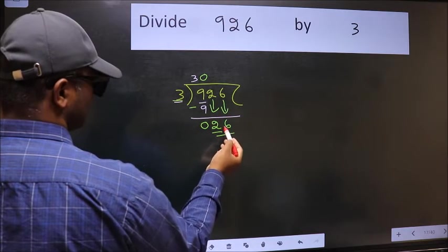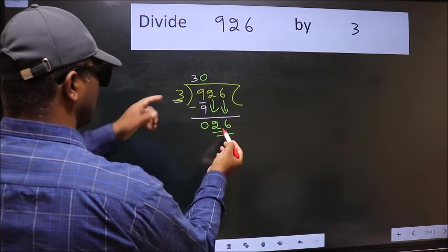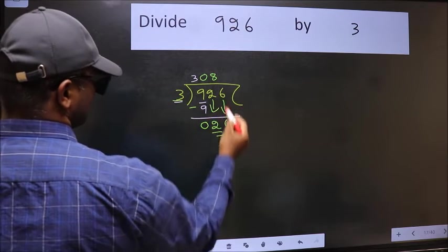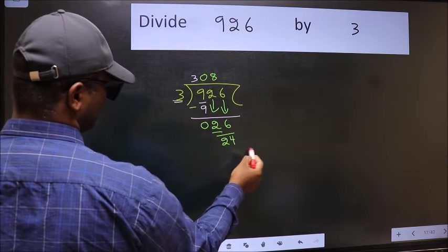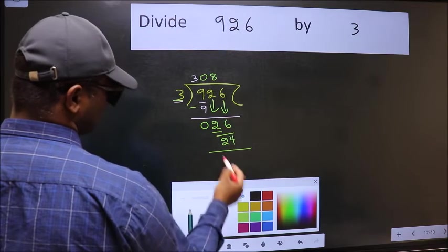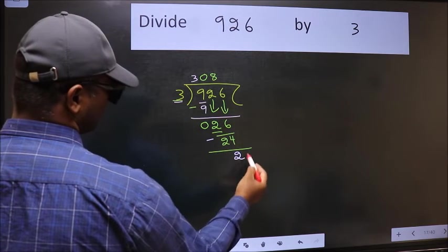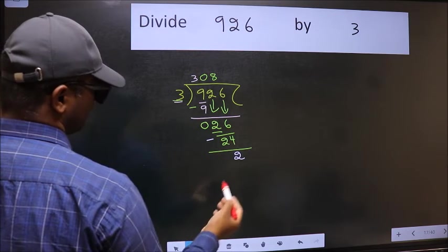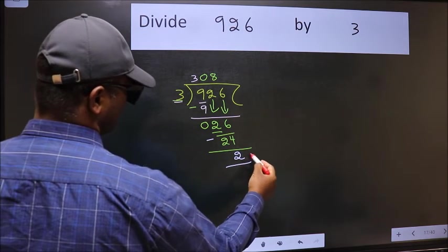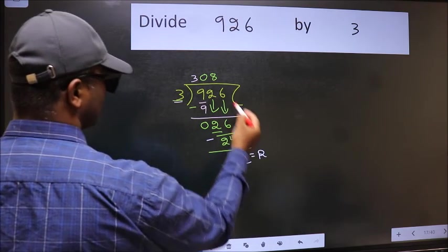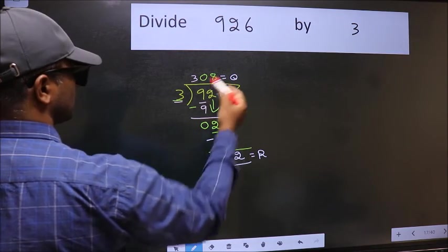Now 26. A number close to 26 in the 3 table is 3 times 8, 24. Now we should subtract. We get 2. No more numbers to bring it down. So we stop here. This is our remainder and this is our quotient.